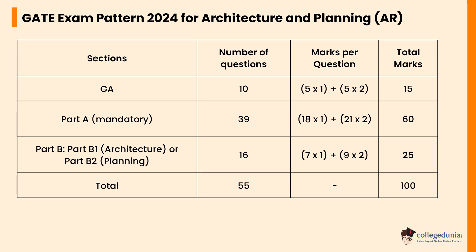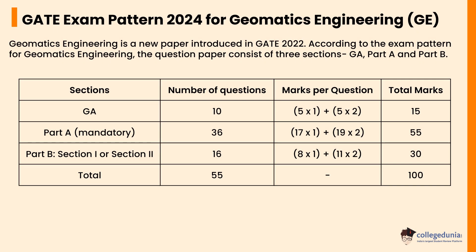Let's check the GATE exam pattern 2024 for Architecture and Planning. The exam pattern for Architecture and Planning has been revised this year. There will be three sections: General Aptitude, Part A, and Part B. Part A is mandatory for all candidates, while Part B is divided into Section B1 (Architecture) and B2 (Planning). General Aptitude includes 10 questions for 15 marks; Part A includes 39 questions for 60 marks; Part B includes 16 questions for 25 marks.